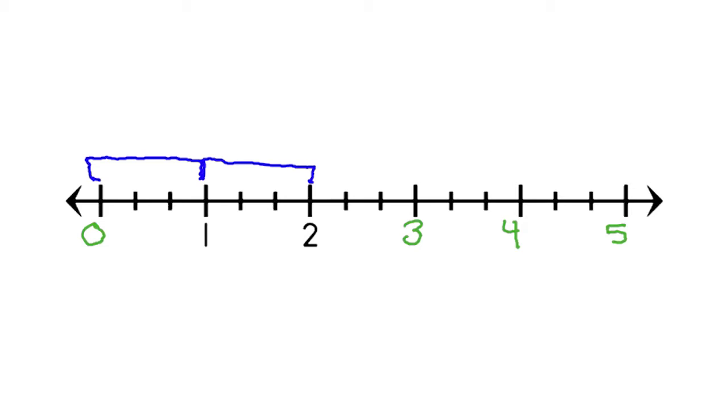Each whole is partitioned into thirds. Each of the lines before one represents lengths less than one. The tick marks between one and two represent lengths greater than one, but less than two units long.